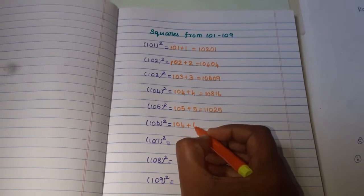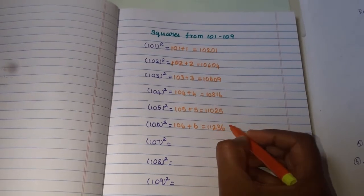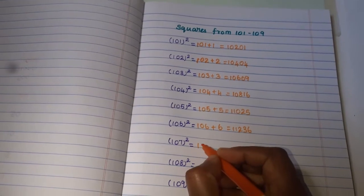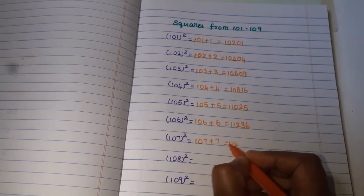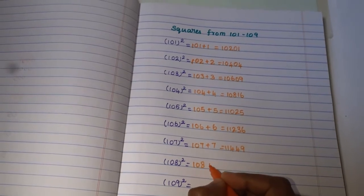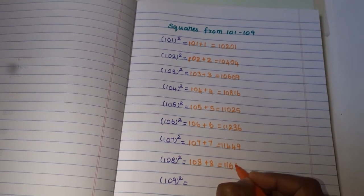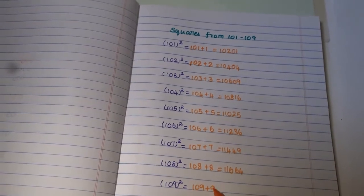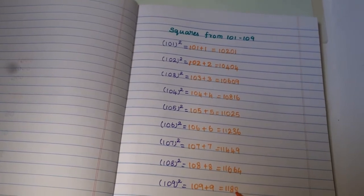And then 106 plus 6, plus 6 is 112. 6 square is 36. Next, 107: 107 plus 7, 114. 7 square is 49. 108 plus 8, 116. 8 square is 64. Next, 109 plus 9, 118. 9 square is 81.